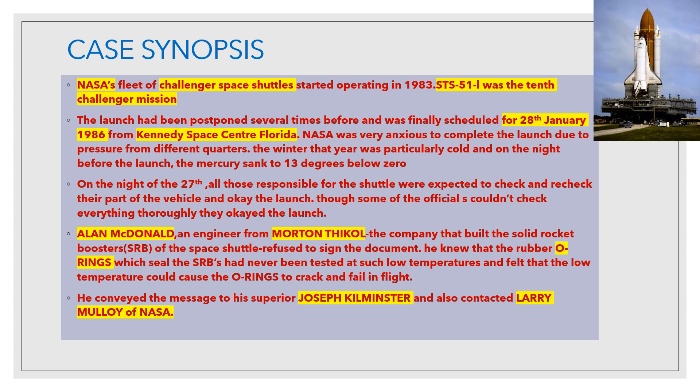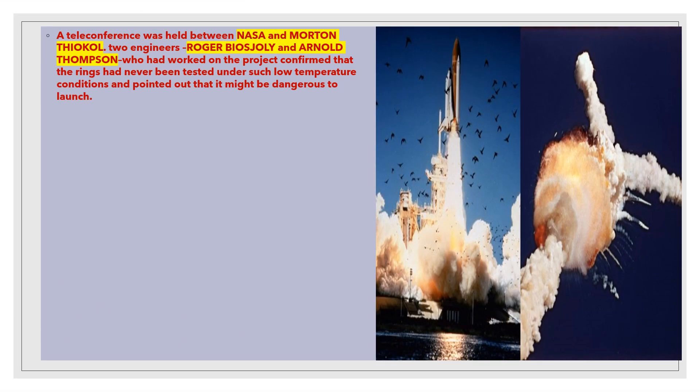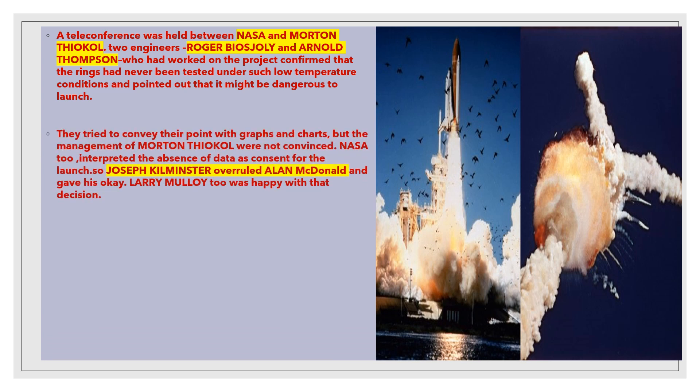Alan McDonald conveyed this concern to his superior, Joseph Kilminster, warning that the launch could be dangerous. Kilminster initially didn't sign either, but then contacted Larry Molloy of NASA. A teleconference was held between NASA and Morton Thiokol. Two engineers, Roger Boisjoly and Arnold Thompson, who had worked on the project, confirmed that the rings had never been tested under such low temperature conditions and pointed out a potentially dangerous situation, presenting graphs and charts. However, Morton Thiokol management was not convinced, and NASA interpreted the absence of data as consent for the launch.